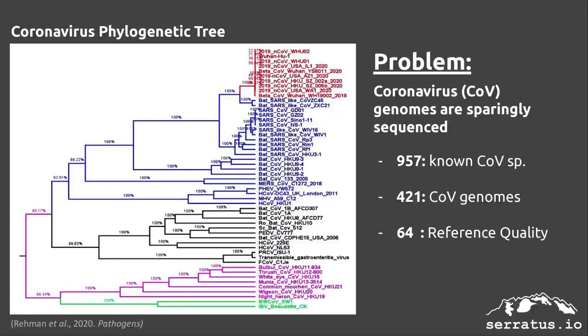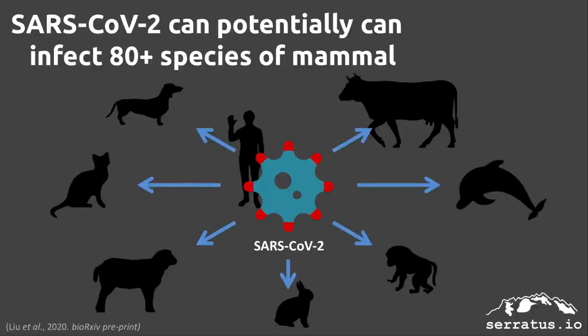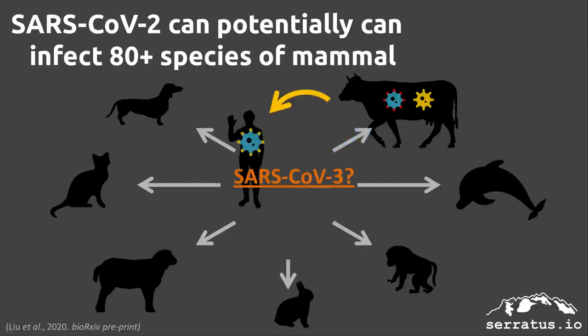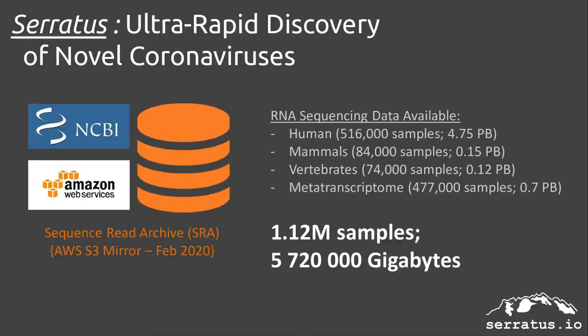A large problem in the field is that while many coronavirus species are known, there aren't complete genomes for all of these species. Given that SARS-CoV-2 is biochemically predicted to be able to infect over 80 species of mammal, this leads to the possibility of SARS-CoV-2 infecting one of these zoonotic animals and recombining with an endogenous coronavirus from that species.